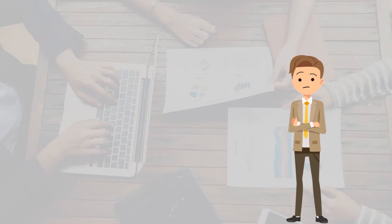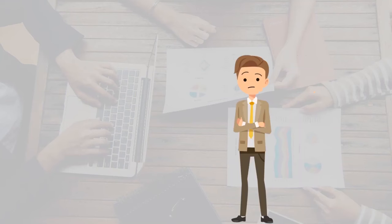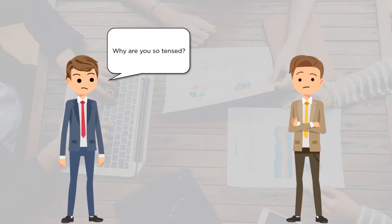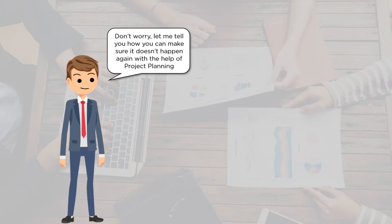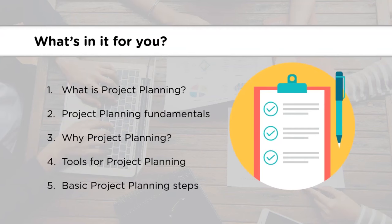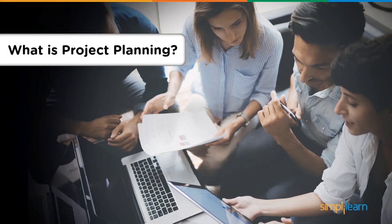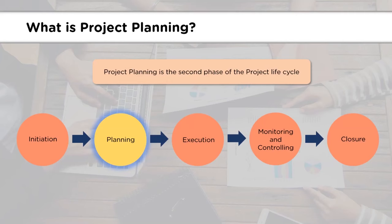Hello, my name is Ishan and welcome to this session on project planning. Today we will be learning about different aspects of project planning. Project planning is the second phase of the project life cycle, which has five phases from initiation to closure. Project planning comes immediately after initiation, in which the project plan is documented and further requirements are defined.